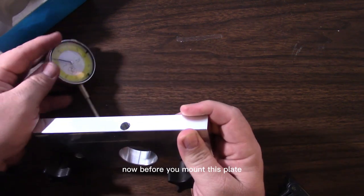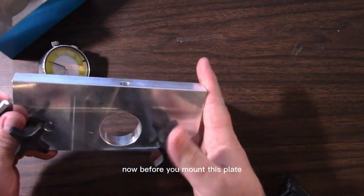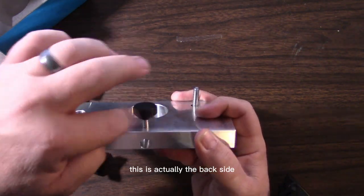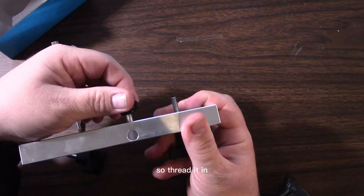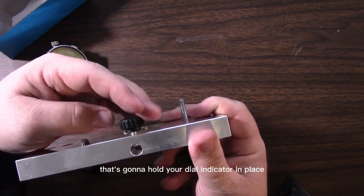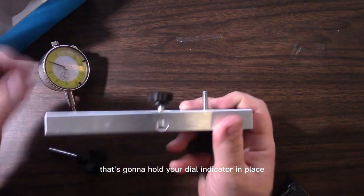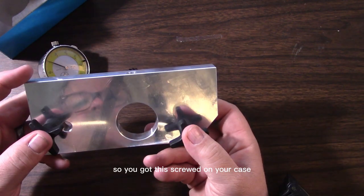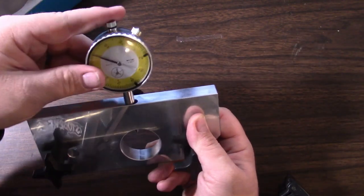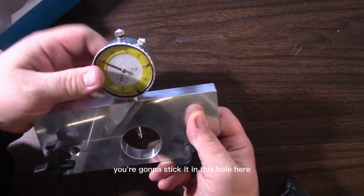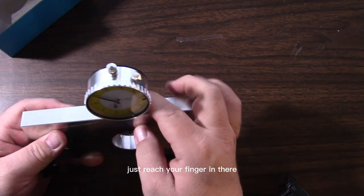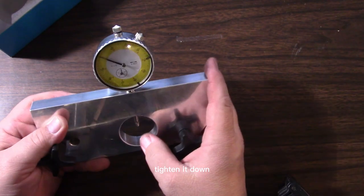You're going to take your dial indicator and you're going to put it in this bore here. Now before you mount this plate, I forgot to mention the thumb screw goes in here. This is actually the back side, so thread it in. Make sure you don't get it into that. That's going to hold your dial indicator in place. So you've got this screwed onto your case.